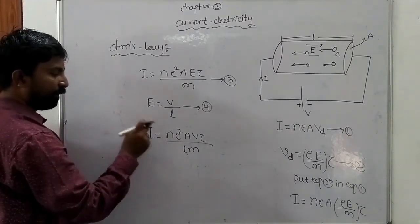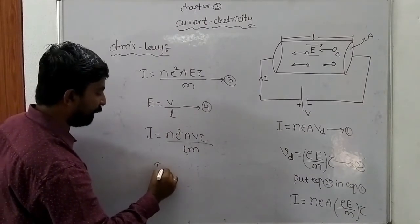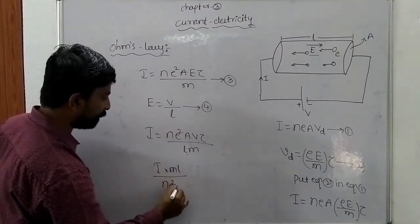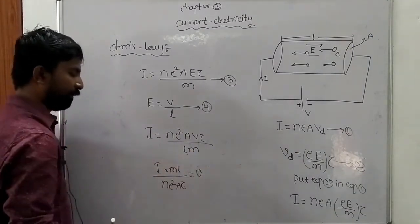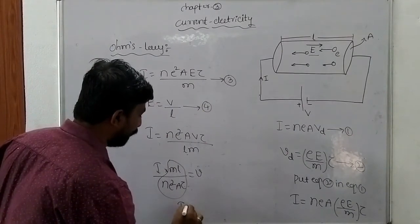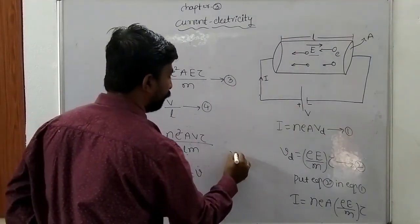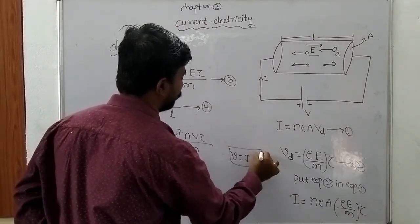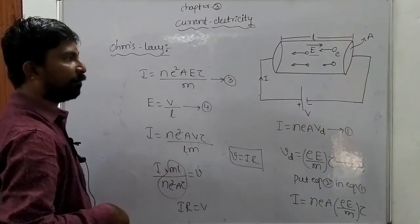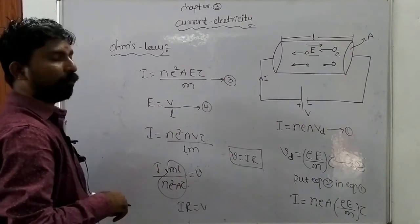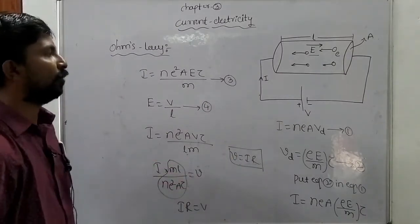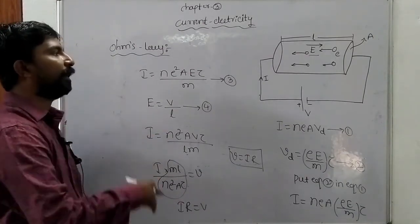Rearranging: V = I·(mL)/(Ne²Aτ). This whole term mL/(Ne²Aτ) is the resistance R of the conductor. Therefore IR = V, or V = IR. This is Ohm's Law.